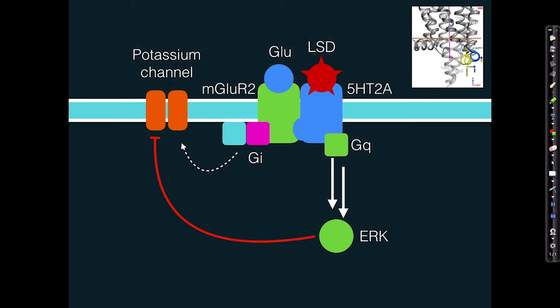Let's revisit the way that we understood this. So let's look at this diagram again. First of all, recall that when a psychedelic drug binds the 5-HT2A receptor, it causes a particular conformational change — it causes this little loop to kind of stick outwards, which allows the 5-HT2A receptor, as shown here, to interact with the glutamate receptor.